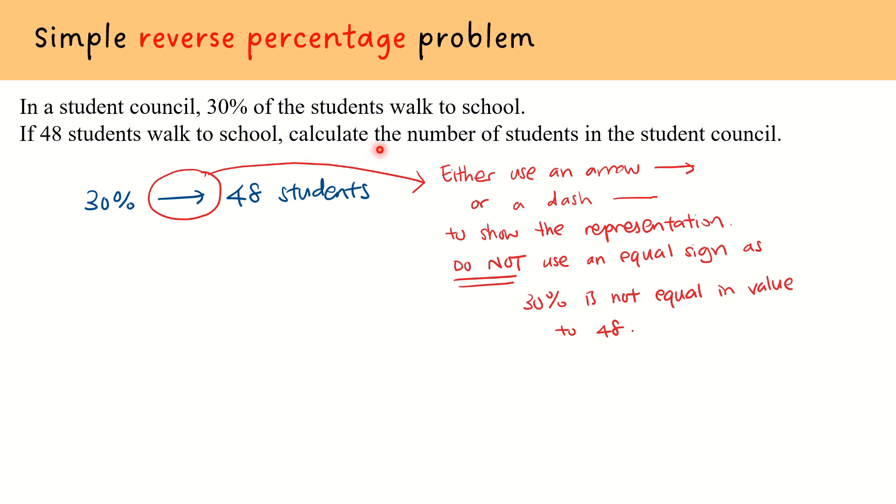Next, in trying to figure out the number of students in the student council, what we're trying to find is 100% because we're finding the total number of students in the student council that makes up the entire whole. So what we could do is first find out what is 1% by taking 48 divided by 30, and then 100% will be 48 over 30 times 100.